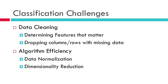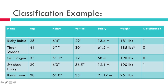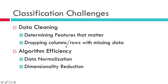Some of the challenges in classification are to clean the data and determining features that matter. Some features just aren't going to contribute to our ability — here, the weight did not contribute, so we would get rid of it because it didn't help. Then we would drop columns and rows that have missing data. For algorithm efficiency we would want to normalize the data, bringing all the data within the same scale so the algorithm is easier on it. And then we can do some dimensionality reduction, which ties into reducing the amount of features or the dimensional space we're working with.